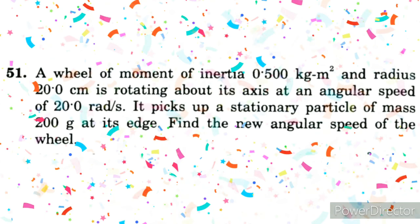This is Rotational Mechanics numerical 51. A wheel of moment of inertia 0.5 kg meter square and radius 20 cm is rotating about its axis at an angular speed of 20 radian per second.